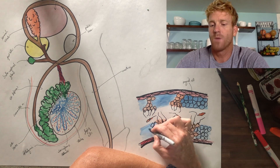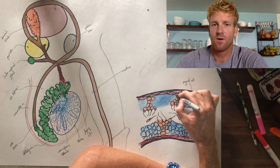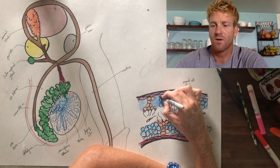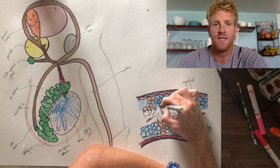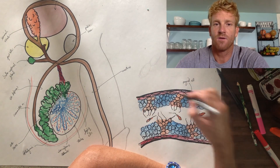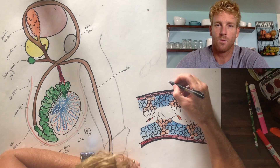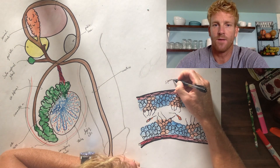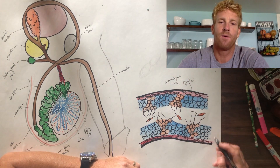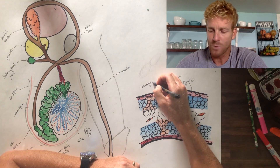Meiosis and spermatogenesis don't occur until puberty, so this process really doesn't begin until the early teens in males. After that, it occurs quite frequently — the average male produces 400 million sperm every day.